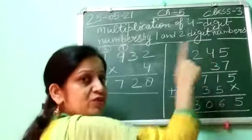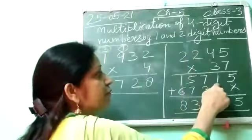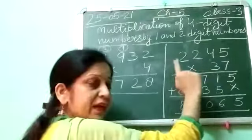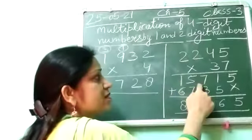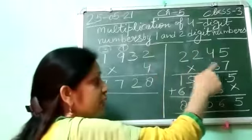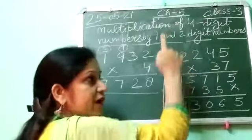Then 7 times 4 is 28. 28 plus 3 is 31. Write 1, again 3 carry. 7 times 2 is 14. 14 plus 3 is 17. 1 carry. 7 times 2 is 14 and 1 is 15.